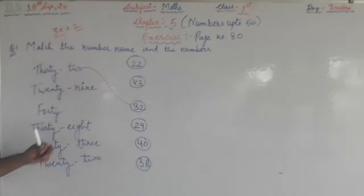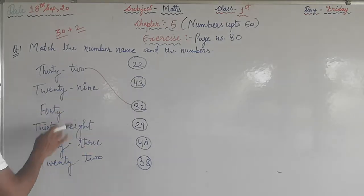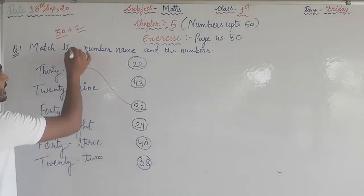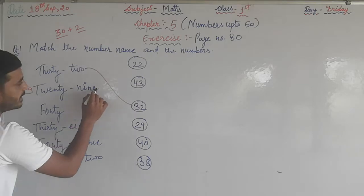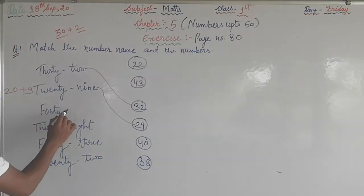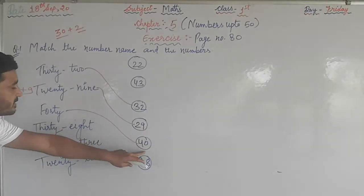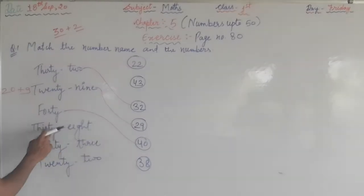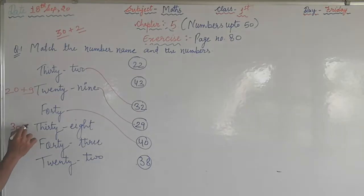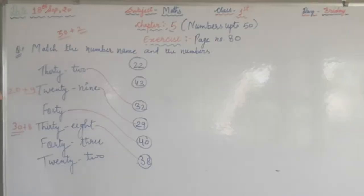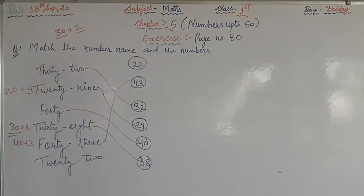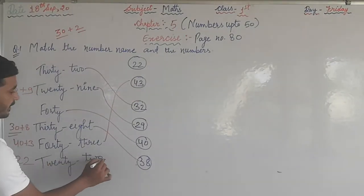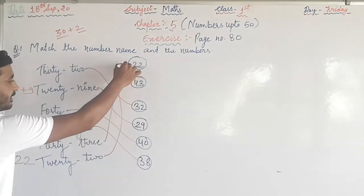See, first match 32 means 30 and 2, where is 32? Here it is 32, so match 32 with this circle. Next, 29, where is 29? 29 means 20 plus 9. Here is 29. 40, match 40 with this circle. 38 means 30 plus 8, where is 38? Match this. 43 means 40 plus 3, match this.